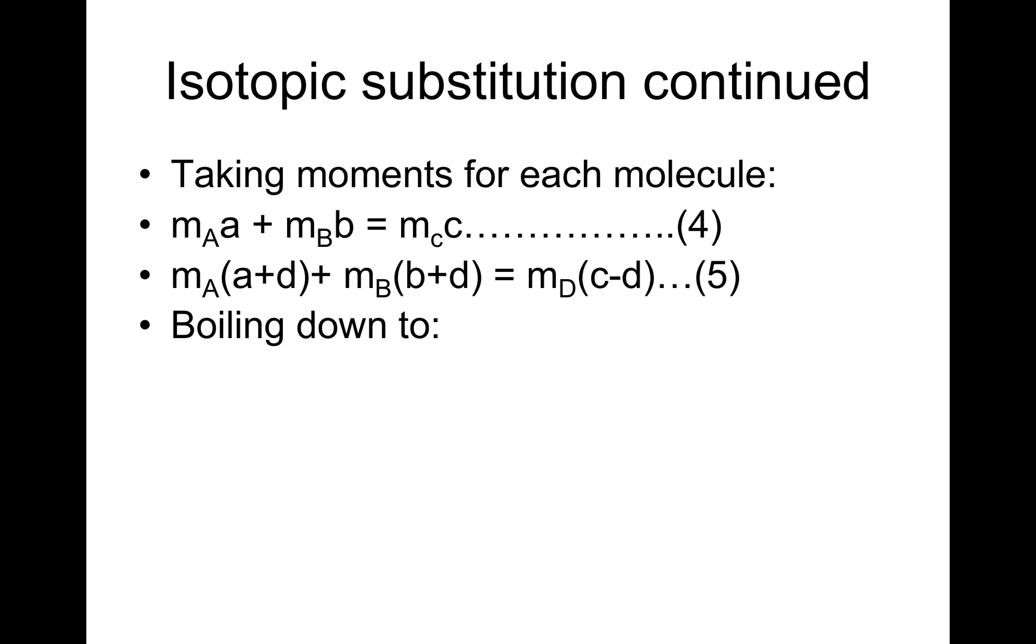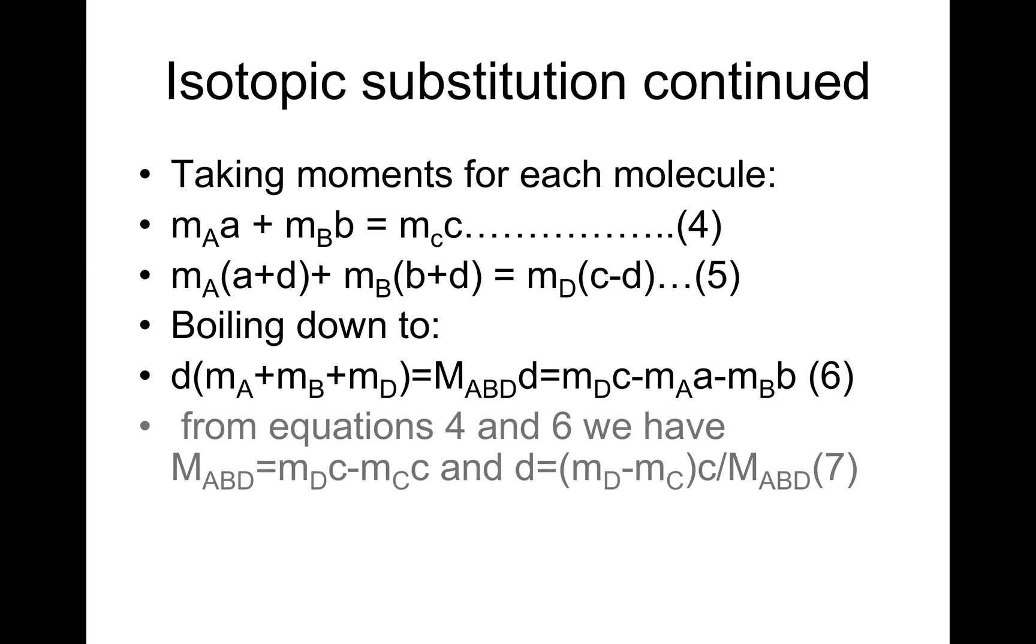And after going through all the algebra, we end at D*(m_A + m_B + m_D) is equal to M_ABD*D, which is equal to m_D*c - m_A*a - m_B*b. That's equation 6. From equation 1, equation 6, we have M_ABD*D is equal to m_D*c - m_C*c. And D is equal to (m_D - m_C)*c/M_ABD.